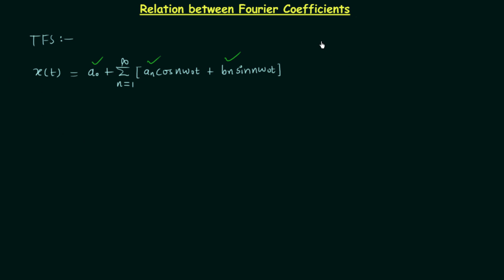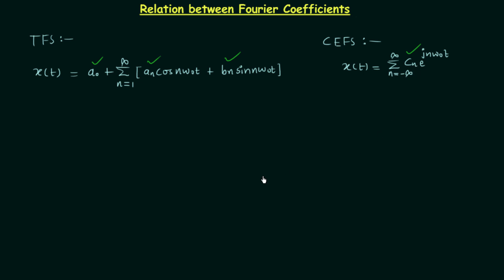I will also write the complex exponential Fourier series expansion. According to this expansion, we can write signal x(t) as summation n equal to minus infinity to infinity, c_n · e^(jn·ω₀·t), where the coefficient is c_n. We are interested in finding the relation between a0, a_n, b_n and c_n, so we will modify the trigonometric Fourier series expansion.